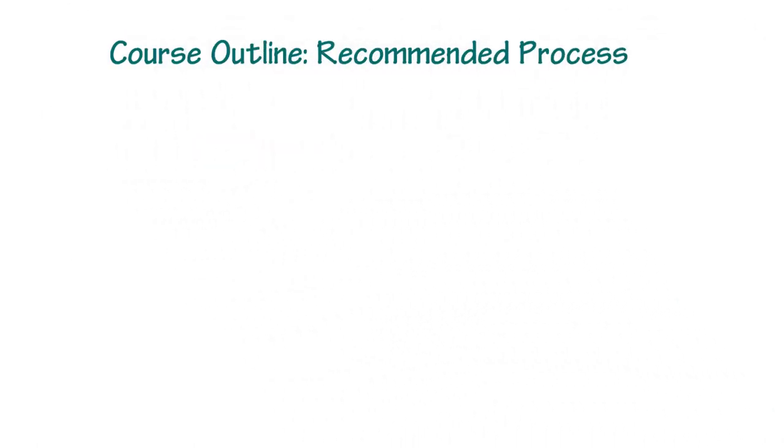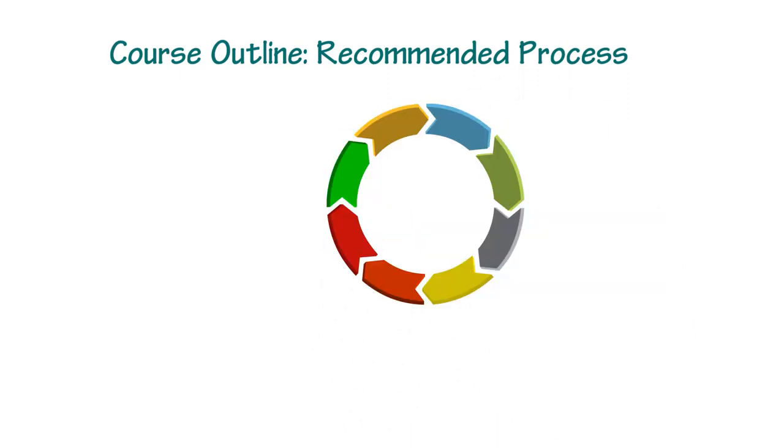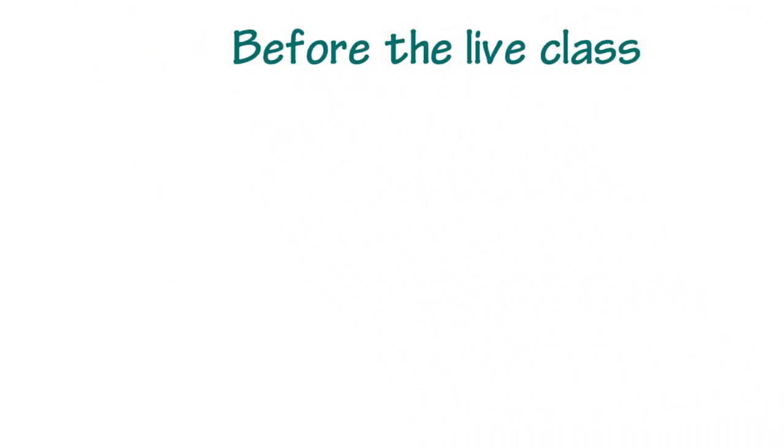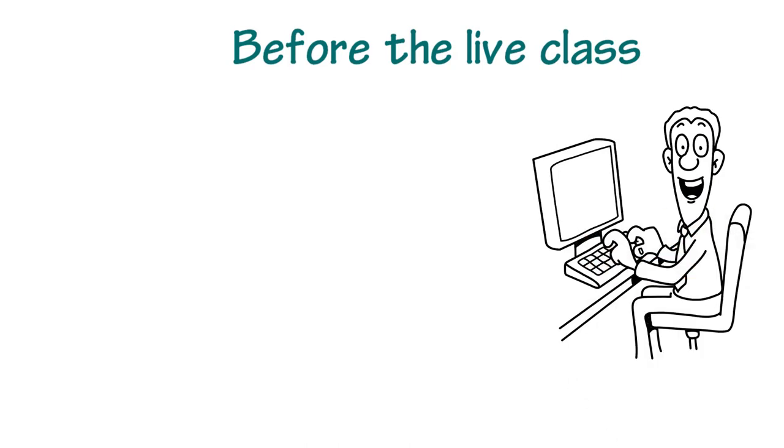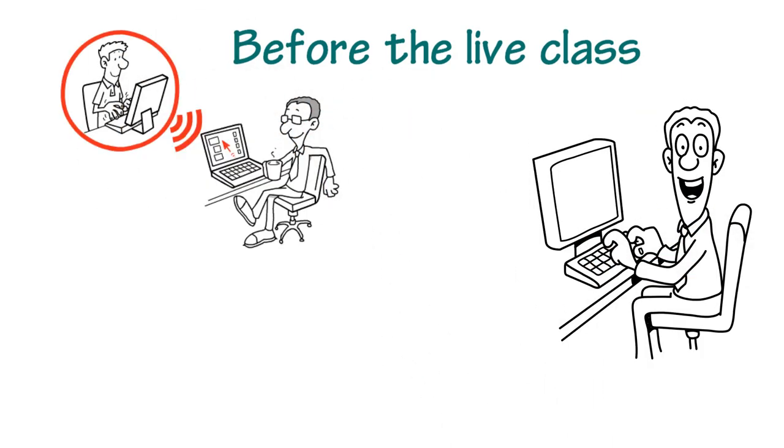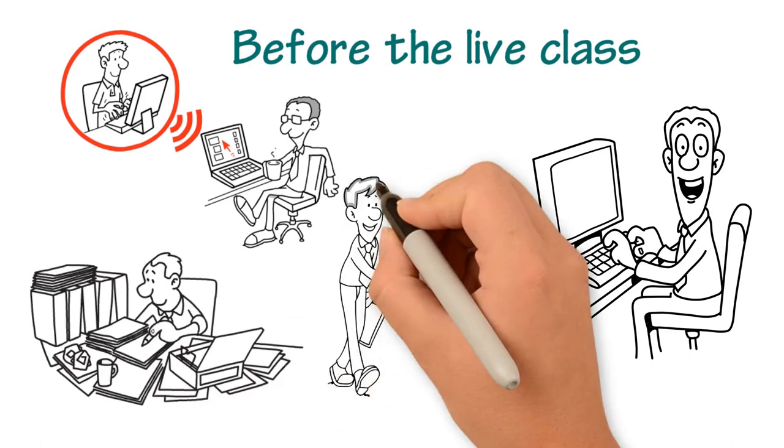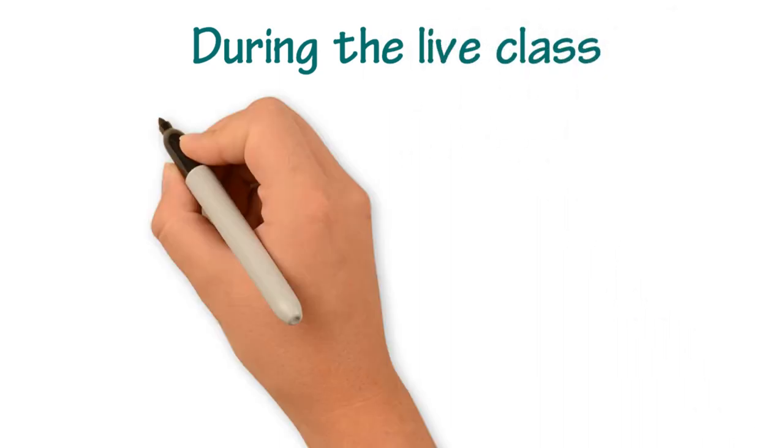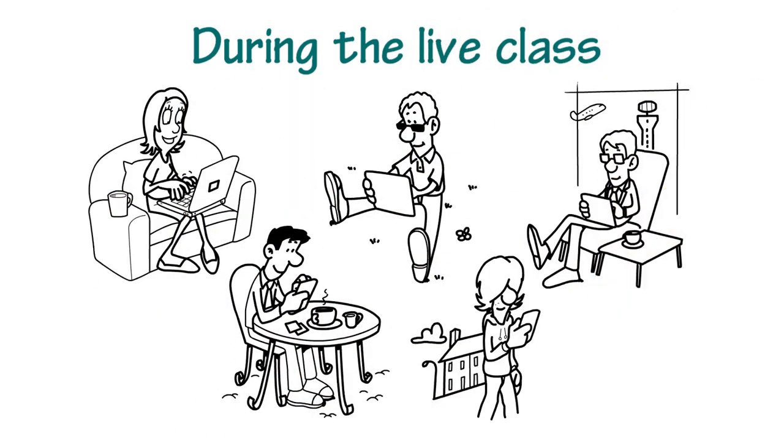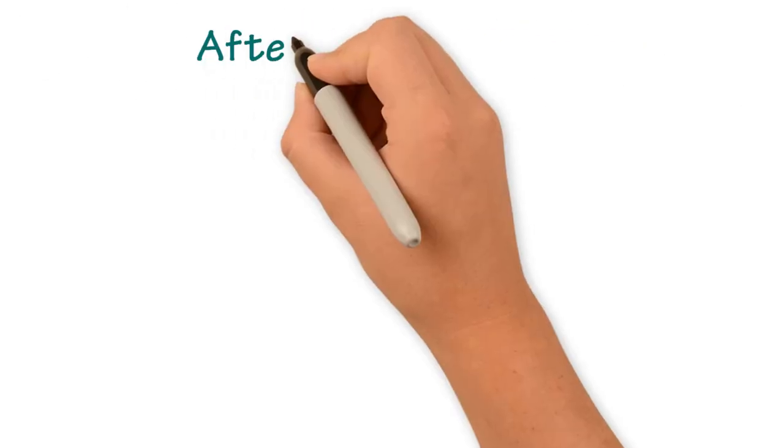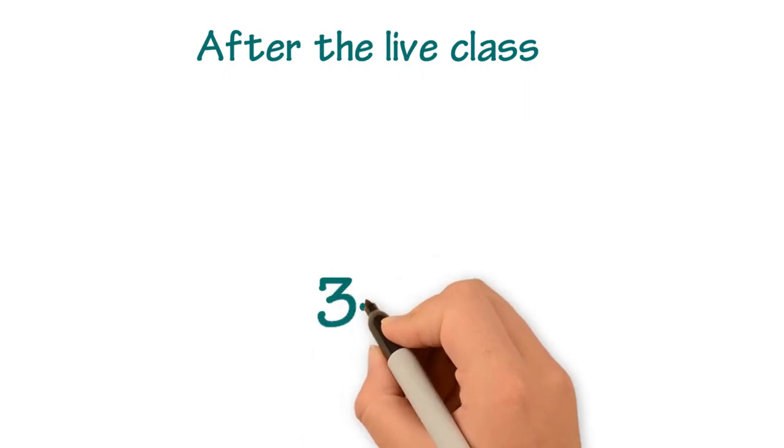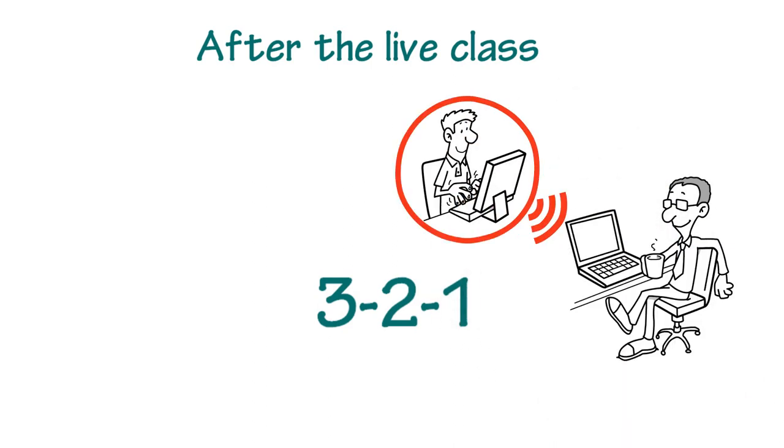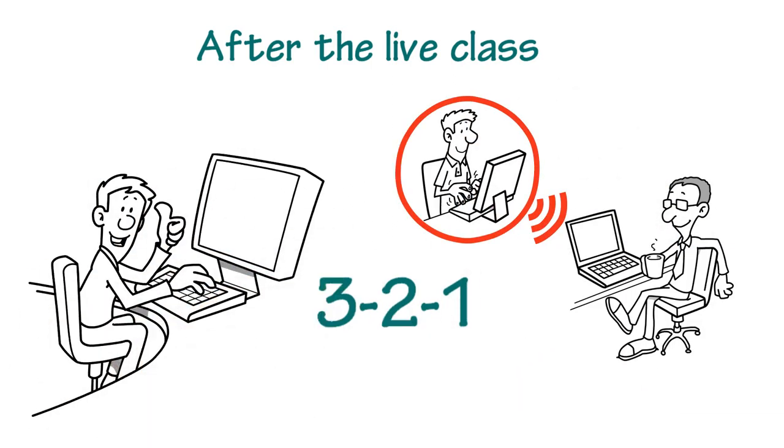Course Outline. Recommended Process. We recommend this process so you can take advantage of the courses to the maximum. Before the live class: 1. Watch the video 2. Post on the discussion board 3. Dig into the bundles 4. Come prepared to talk. During the live class: Participate in the discussions, talk and share ideas, and or post on the chat. After the live class: 1. Complete the 3-2-1 reflection 2. Respond to your fellow learners on the chat 3. Retake the quiz if desired.